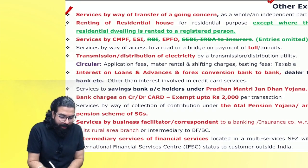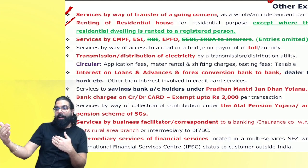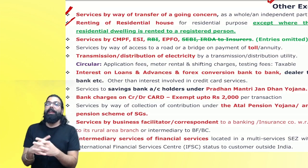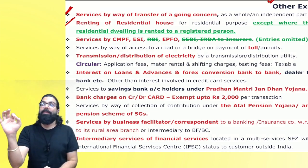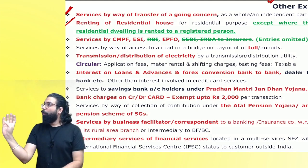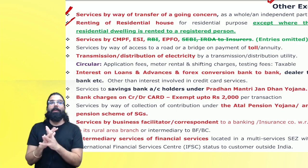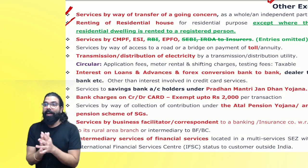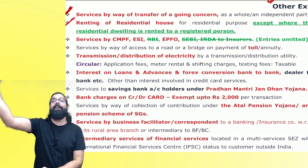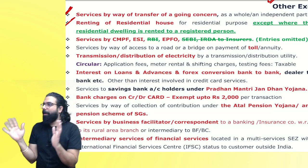The next one is renting of residential house. If I gave a residential house to anyone, the government is telling that giving a residential house to anyone to stay — food, clothing, and shelter is very important — hence there will be no GST. But then government thought let's collect some money, and told if you are giving to a registered person, let the registered person pay the GST under RCM.